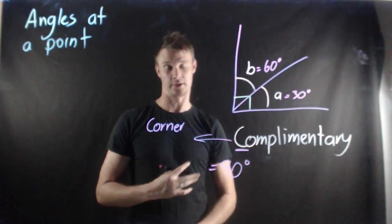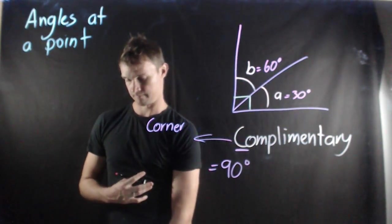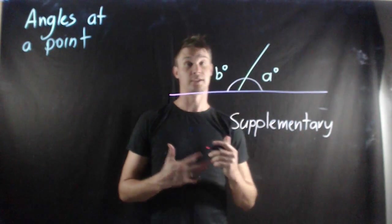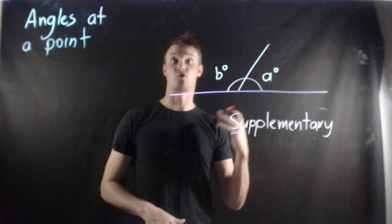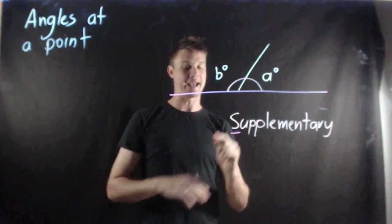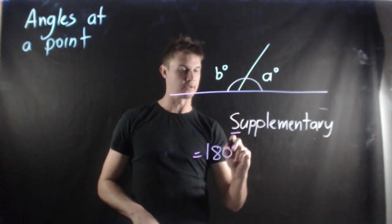So next we look at the supplementary angle. The supplementary angle is a little different to the complementary. The supplementary, as you can see, is a straight line, so they're angles that add up to 180 degrees.